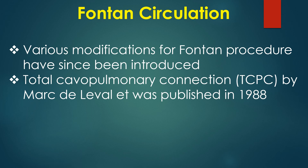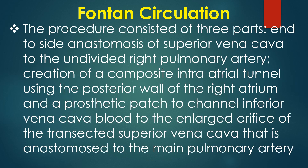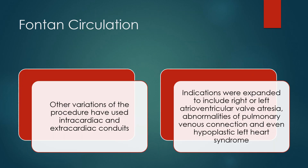Various modifications of the Fontan procedure have since been introduced. Total cavopulmonary connection by Marc de Leval was published in 1988, consisting of: end-to-side anastomosis of the superior vena cava to the undivided right pulmonary artery; creation of a composite intra-atrial tunnel using the posterior wall of the right atrium and a prosthetic patch to channel inferior vena caval blood to the transected superior vena cava anastomosed to the main pulmonary artery. Indications were expanded to include right or left AV valve atresia, abnormalities of pulmonary venous connection and even hypoplastic left heart syndrome.